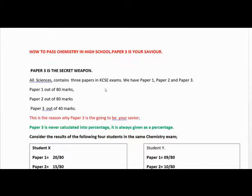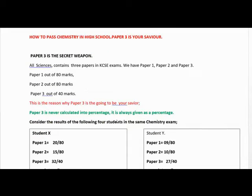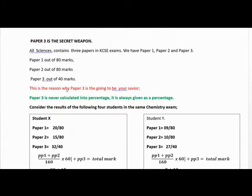As you know very well, we have three papers in all sciences: biology, chemistry, and physics. Paper 1 is out of 80 marks, Paper 2 is out of 80 marks, and Paper 3 is out of 40 marks in all three sciences. We want to see how Paper 3 is your savior, your remaining weapon when you don't have content in Paper 1 or Paper 2. Paper 3 will save you.